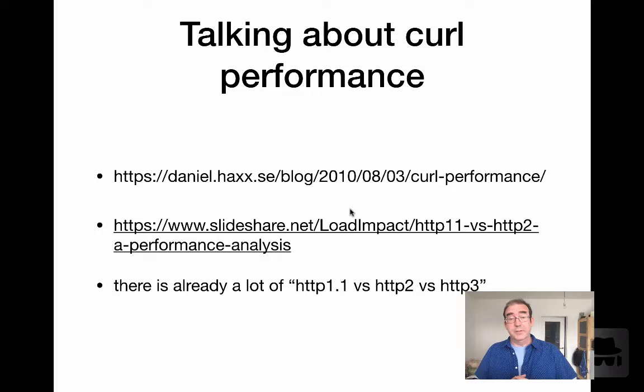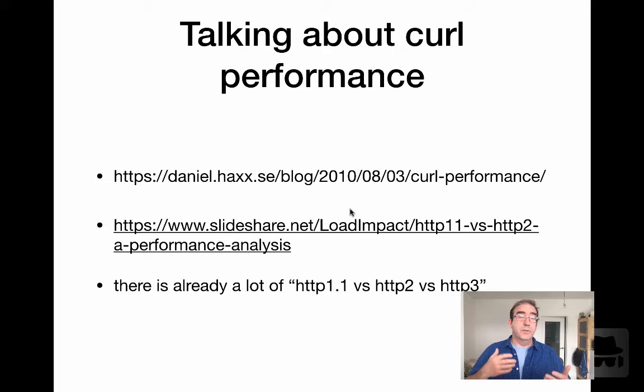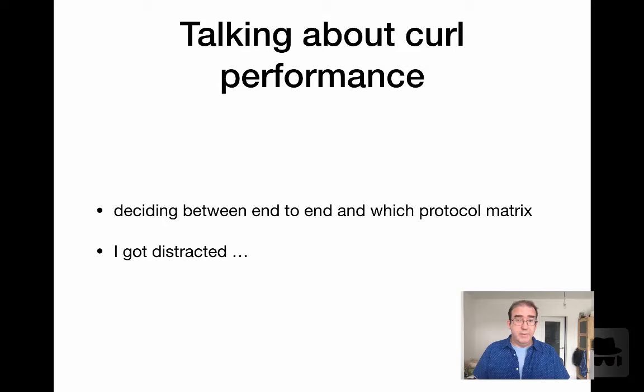There's been a lot of previous work about characterizing curl and libcurl's performance. Unsurprisingly, Daniel Stenberg has a few blog articles and presentations. And in the recent past, there's been an enormous amount of work trying to characterize how HTTP 1.1 versus HTTP 2 versus HTTP 3. When I started this effort thinking about how to create a benchmark and what the protocol matrix should be, I got a little distracted.